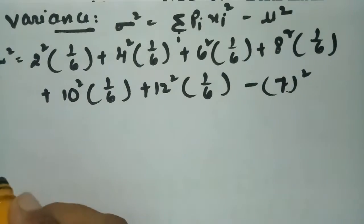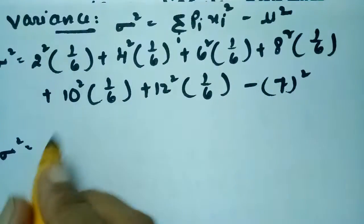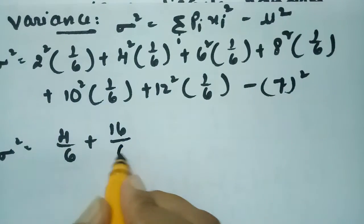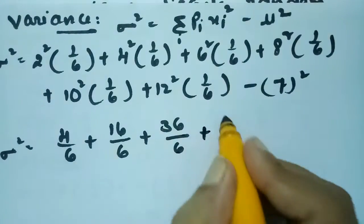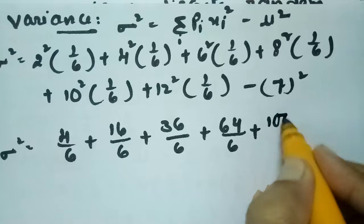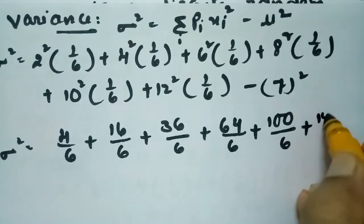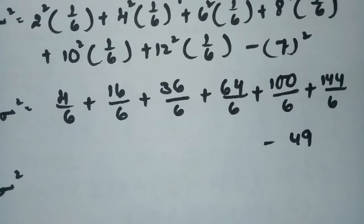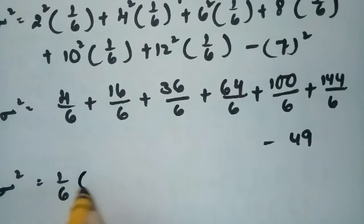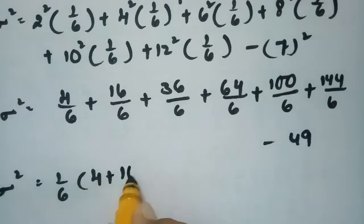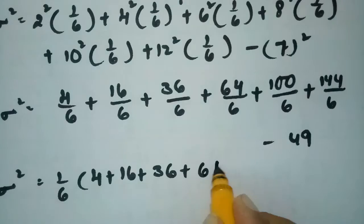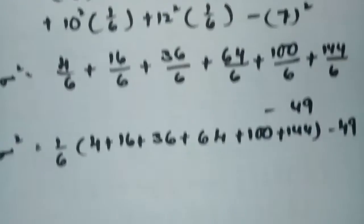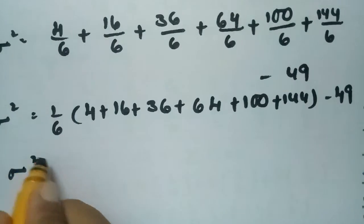Evaluating the squared terms: 2² = 4, 4² = 16, 6² = 36, 8² = 64, 10² = 100, 12² = 144. So σ² = (1/6)(4 + 16 + 36 + 64 + 100 + 144) − 49.